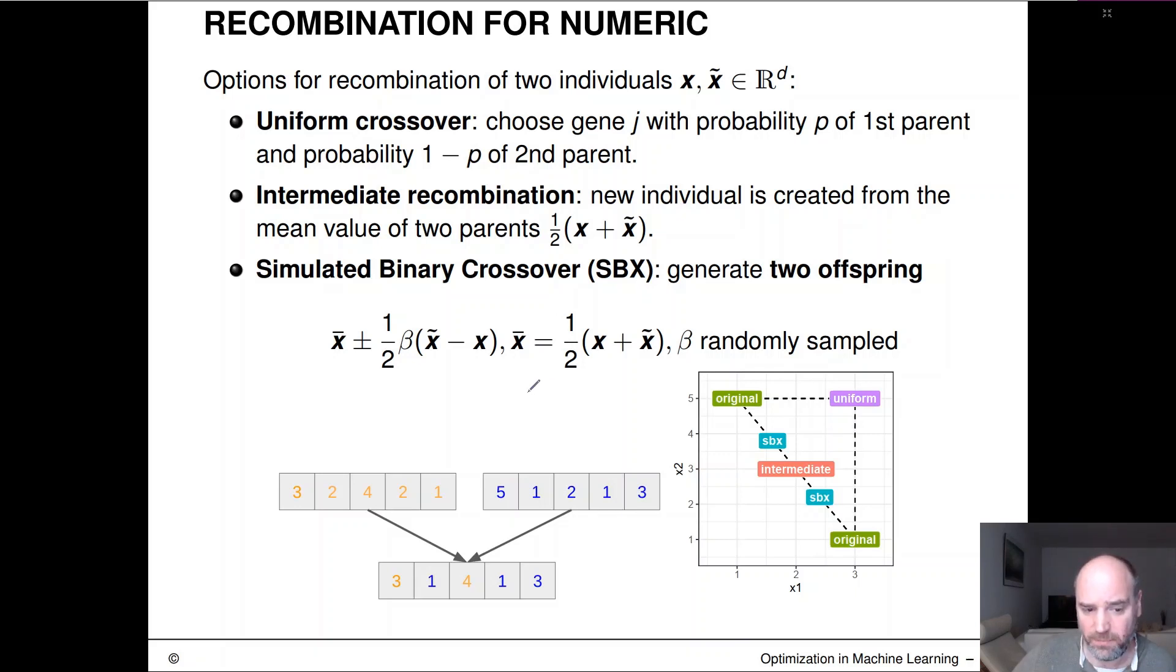So first of all, how does our encoding look like? So a parent is basically a bunch of d real values. So maybe d is five, and then here we have our x, here we have our x tilde, and in each of them these components which we would call genes of the complete chromosome, and we have a real number in there.